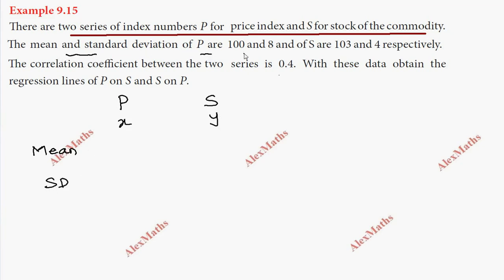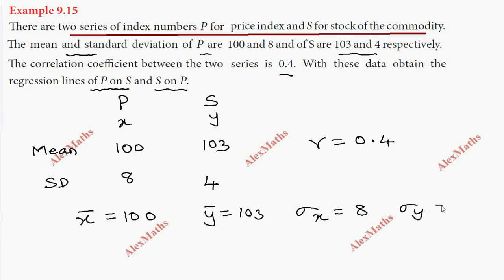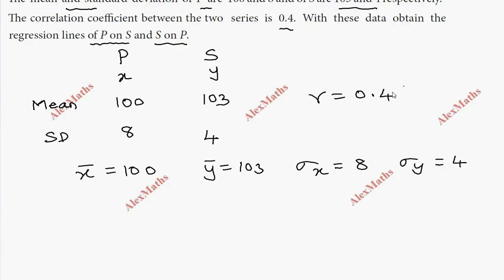The standard deviation of P is 100, standard deviation of S is 103 and 4. R is equal to 0.4. We need to find the regression lines of P on S and S on P. So given: x̄ = 100, ȳ = 103, σx = 8, σy = 4. This is the first regression equation P on S.